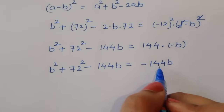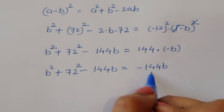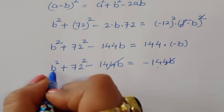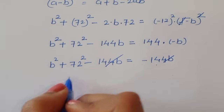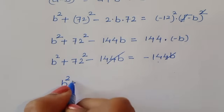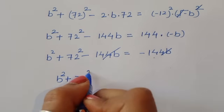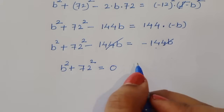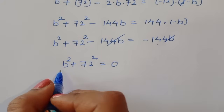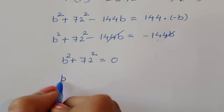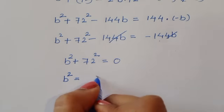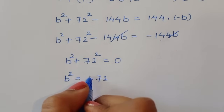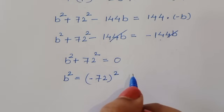The minus 144b on the left cancels with the minus 144b on the right. So the remaining term is b² plus 72² is equal to 0. Therefore b² is equal to minus 72².